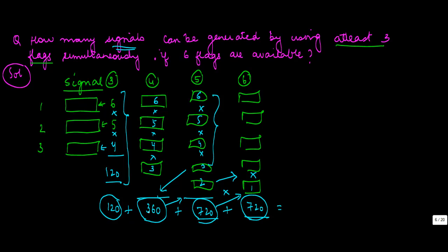So once you do that, which will be seven plus seven, fourteen, plus three, seventeen sixty, eighteen, this will give you 1920. So you can generate your signal in 1920 ways by using at least three flags simultaneously if total of six flags are available.